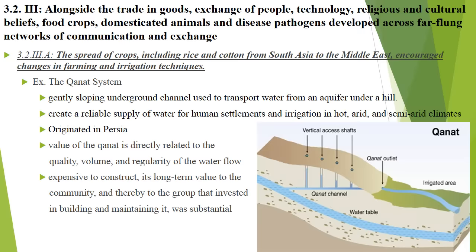3.2.3a: the spread of crops, including rice and cotton from south Asia to the Middle East, is encouraging changes in farming and irrigation. As more and more people need to be fed, water can be hard to get in desert regions, so better methods are needed. The great example AP expects you to know is the qanat system — here's a visual on the bottom right. Originating in Persia, this is a gently sloping underground channel that transfers water from an aquifer under a hill.